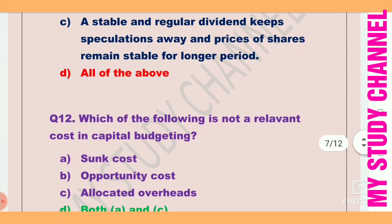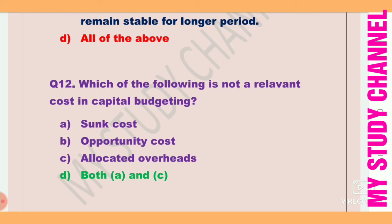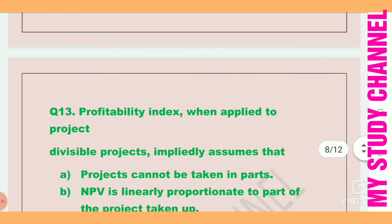Next question: Which of the following is not a relevant cost in capital budgeting? Option A is sunk cost, B is opportunity cost, C is allocated overheads, and D is both A and C. Option D is the right answer — sunk cost and allocated overheads are not relevant costs in capital budgeting.